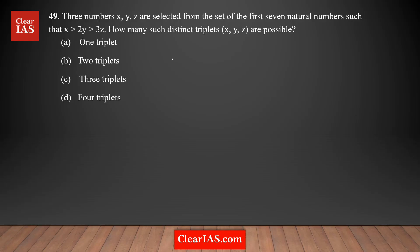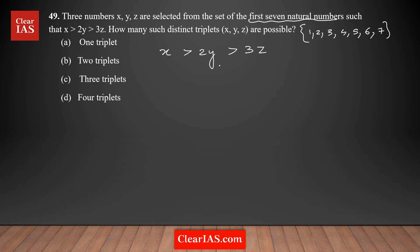Question number 49: three numbers x, y, z are selected from the set of first seven natural numbers — that is 1, 2, 3, 4, 5, 6, and 7 — such that the condition x is greater than 2y, and 2y is greater than 3z must be satisfied. How many distinct triplets are possible for x, y, z?